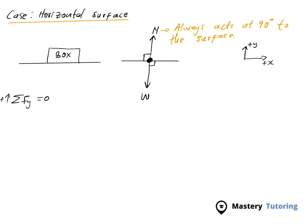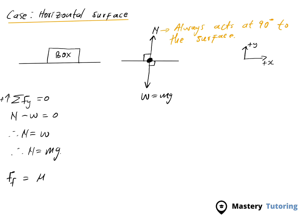The forces in the vertical direction are the normal force and the weight. Since upwards is positive, N is positive and W is negative, so N minus W equals 0, therefore N equals W. We know that W equals mg, so substituting, the normal force equals mg. Therefore, frictional force FF equals mu times N equals mu times mg.